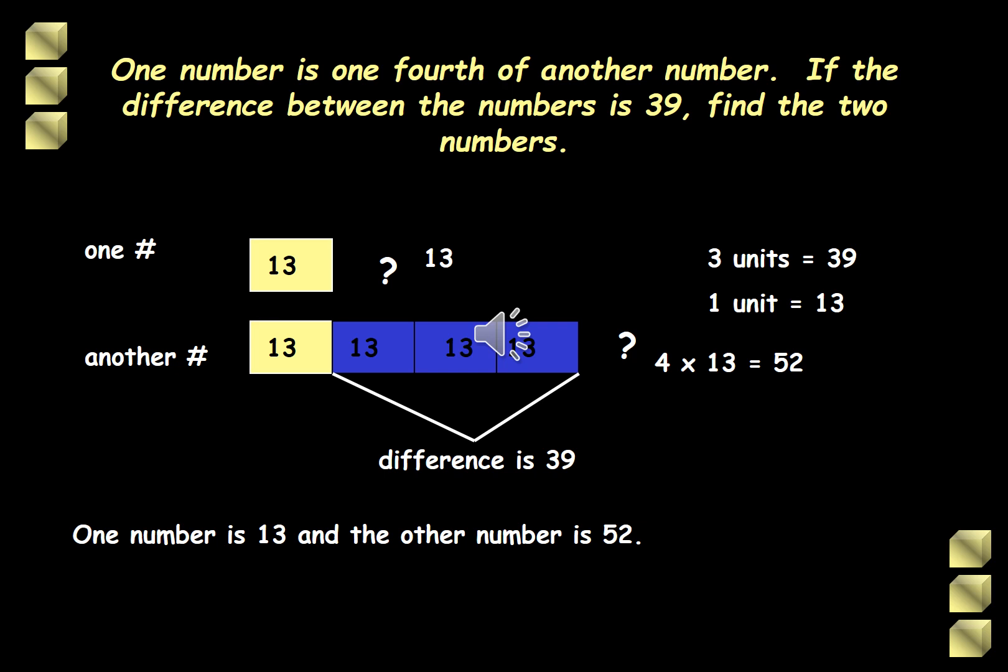We can denote the first number as a single bar and the other number as a bigger bar. And since we have a relationship that the first number is just one-fourth of the other bigger number, we can divide the bigger number into 4 equal parts that will give us each part or each unit as one-fourth. So we have 4 equal units.